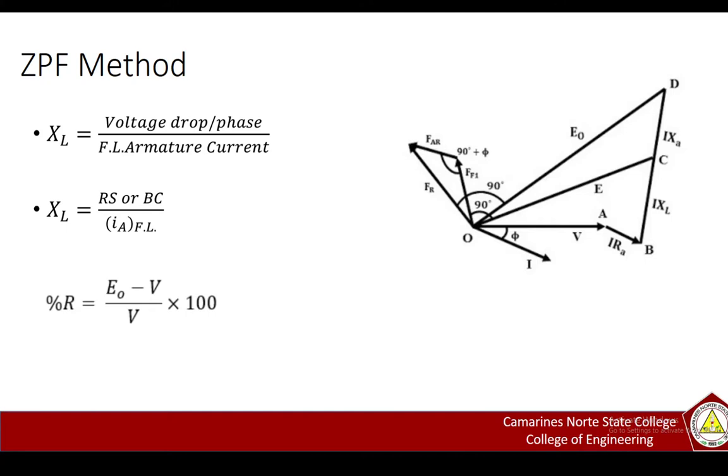Since we have done this, to calculate voltage regulation, we will use the formula: percentage regulation equals E0 minus V all over V times 100. And that will be all. That concludes my discussion. Thank you for patiently listening, and God bless.